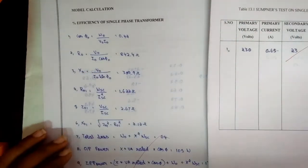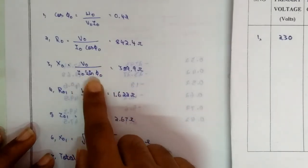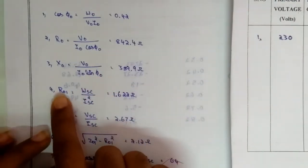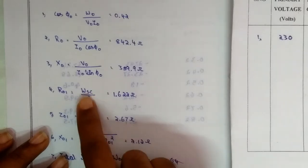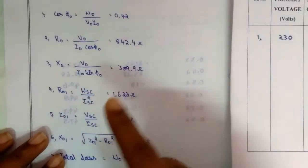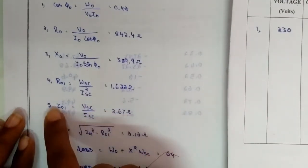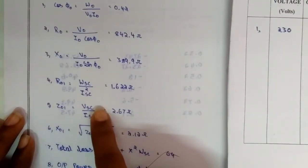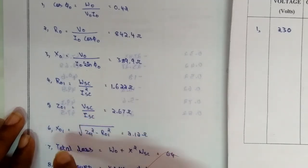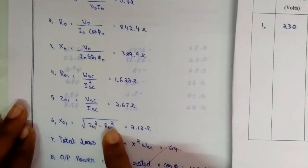And X₀, the formula will be V₀ by I₀ sin φ₀. And R₀₁ is equal to WSC, the short circuit current that is secondary side, divided by ISC square. And Z₀₁ is equal to VSC by ISC.